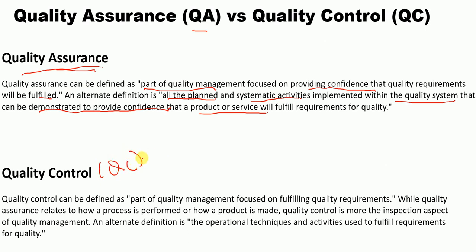Quality control, or QC, is also part of the quality management system in the pharmaceutical or biotechnological industry. QC is focused on fulfilling quality requirements. While quality assurance relates to how a process is performed or how a product is made, quality control is more about the inspection or detection aspect of quality management. An alternate definition: QC is the operational techniques and activities used to fulfill requirements for quality.